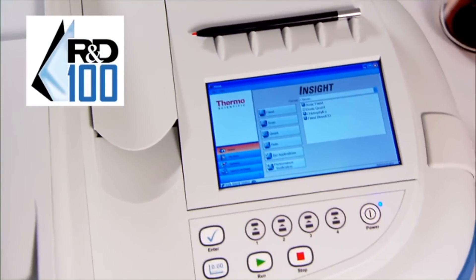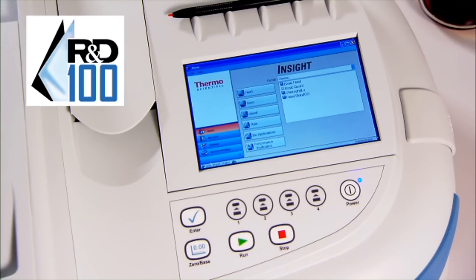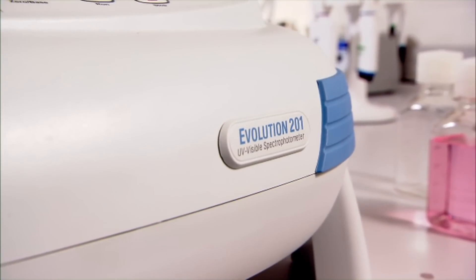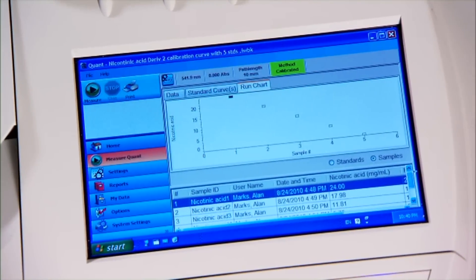Recognized by R&D Magazine as one of the most technologically significant products of 2011, the Thermo Scientific Evolution 200 Series UV Visible Spectrophotometer simplifies the sophisticated.